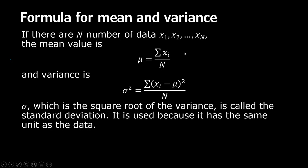Here x_i are the data values. You know how to get the mean value: add up all the data values and divide by the total number of values you have, which is exactly what you've done when you calculate averages. The variance is in the same form — you take the difference between each data value and the mean.